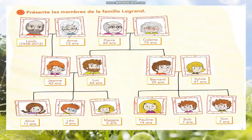Les grands-parents: le grand-père Monsieur Louis, la grand-mère Madame Anna, le grand-père Monsieur Pierre, la grand-mère Madame Colette. Monsieur Louis et Madame Anna ont une fille, elle s'appelle Jeanne. Monsieur Pierre et Madame Colette ont deux fils, Luc et Bernard. Bernard est le mari de Madame Sylvie. Bernard et Sylvie ont trois enfants: Pauline, Bob et Tom. Luc et Jeanne ont trois enfants: Alice, Léo et Maggie.